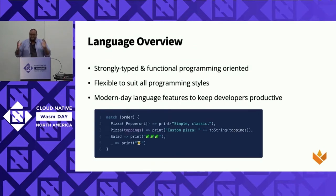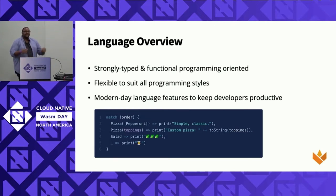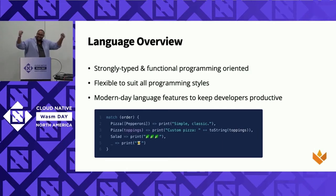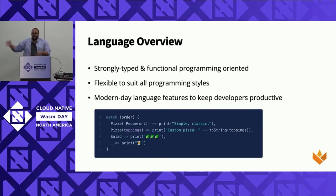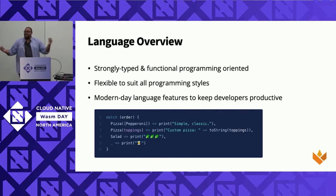We've got modern day language features to keep everyone productive. Something that people love in all the popular languages right now is pattern matching. If you take a look at this code example at the bottom, we've got an order at a restaurant. Here we've got a one-topping pepperoni pizza — if that order comes in, we can match this case and do something with that. If we've got other toppings, we can do something with that. If they order a salad, we can be happy with our salad emojis. It's a good time.